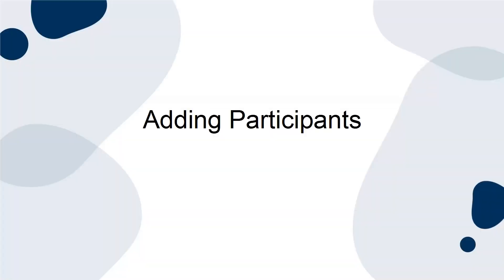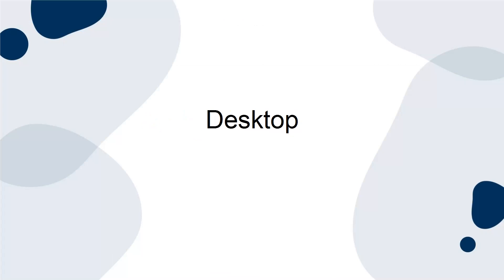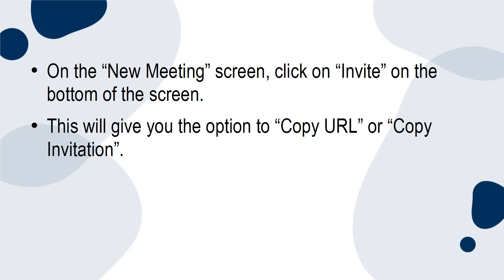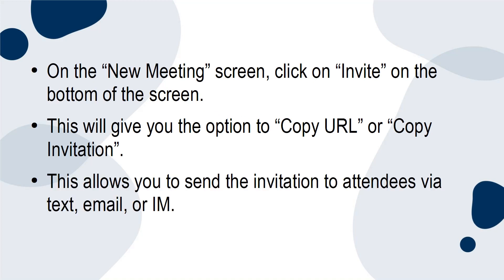Here are the steps for adding participants to your meeting. Desktop. On the New Meeting screen, click on Invite at the bottom of the screen. This will give you the option to copy the URL or copy the invitation, allowing you to send the invitation to attendees via text, email, or IM.